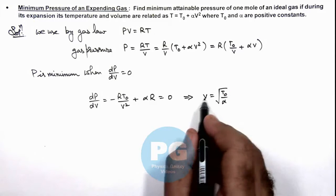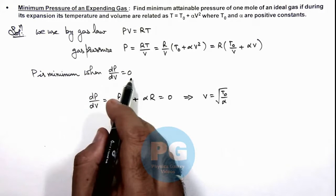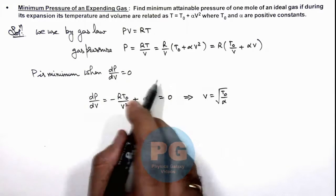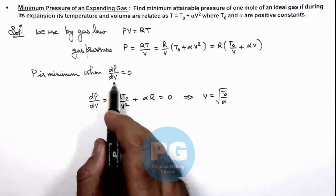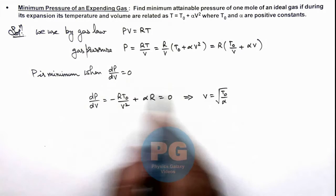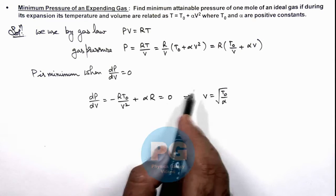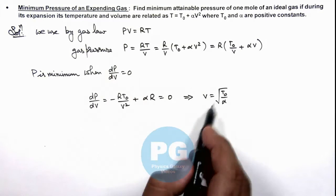This is the volume at which dP/dV becomes zero. By second derivative check you can verify that at this volume, the second derivative of P with respect to V will come out to be positive, which means the value of pressure is minimum at this value.